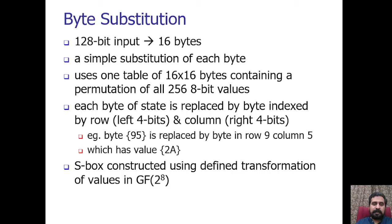The first operation is byte substitution. In AES, like DES, substitution is used — however, the mechanism is different. First, substitution is done for each byte. Second, only one table is used for transformation of every byte, meaning if two bytes are the same, the transformation is also the same. The substitution in AES is defined by either a table lookup process or a mathematical calculation in the Galois field GF(2^8). AES uses two invertible matrix transformations.